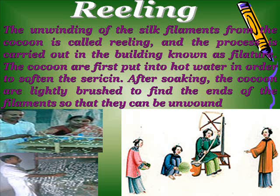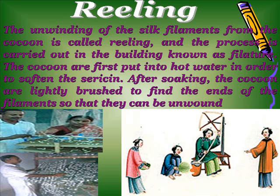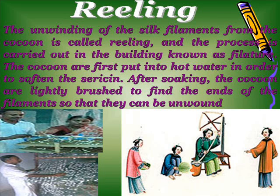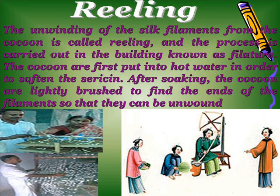Reeling: The reeling process is carried out in a building known as a sericulture unit. The cocoons are first put in hot water in order to soften the sericin. After soaking, the silkworms are lightly brushed to find the ends of the filament so that they can be unwound.